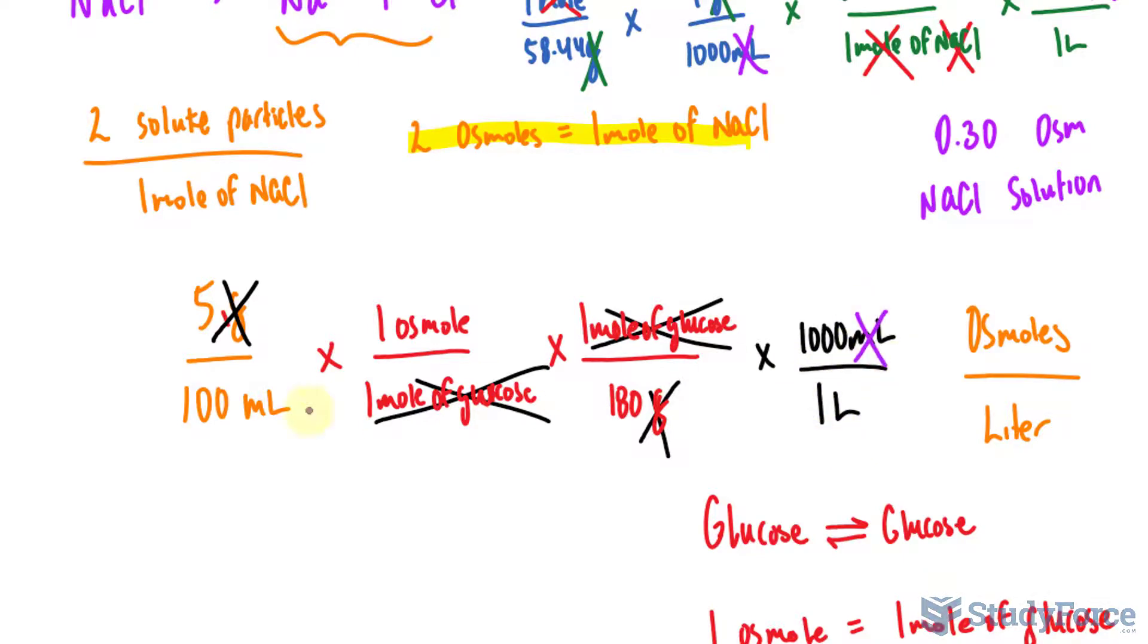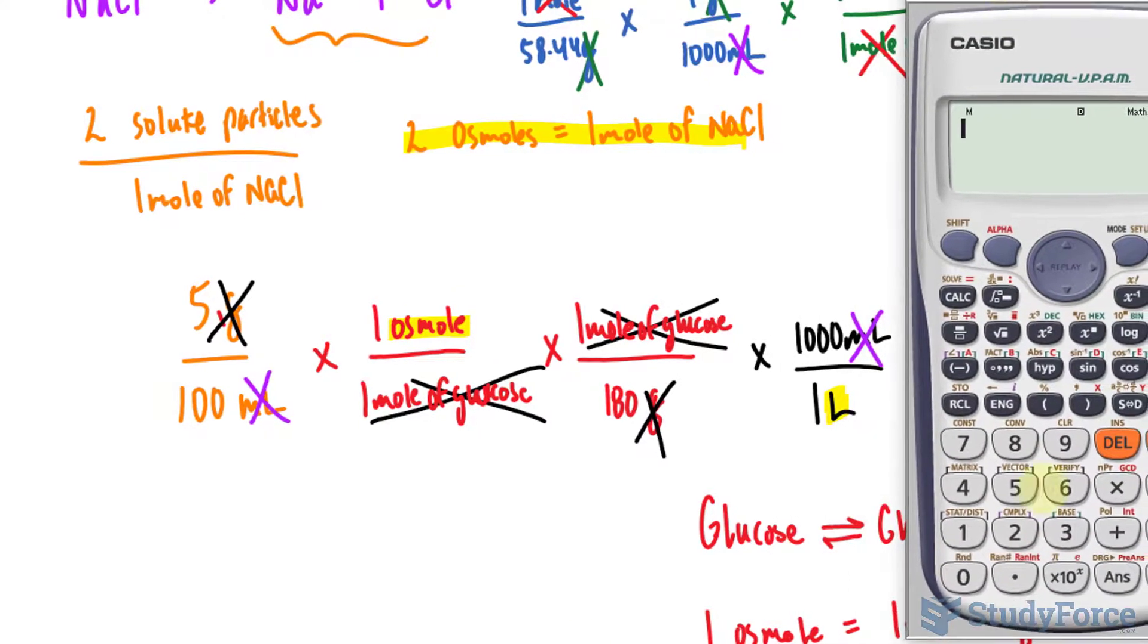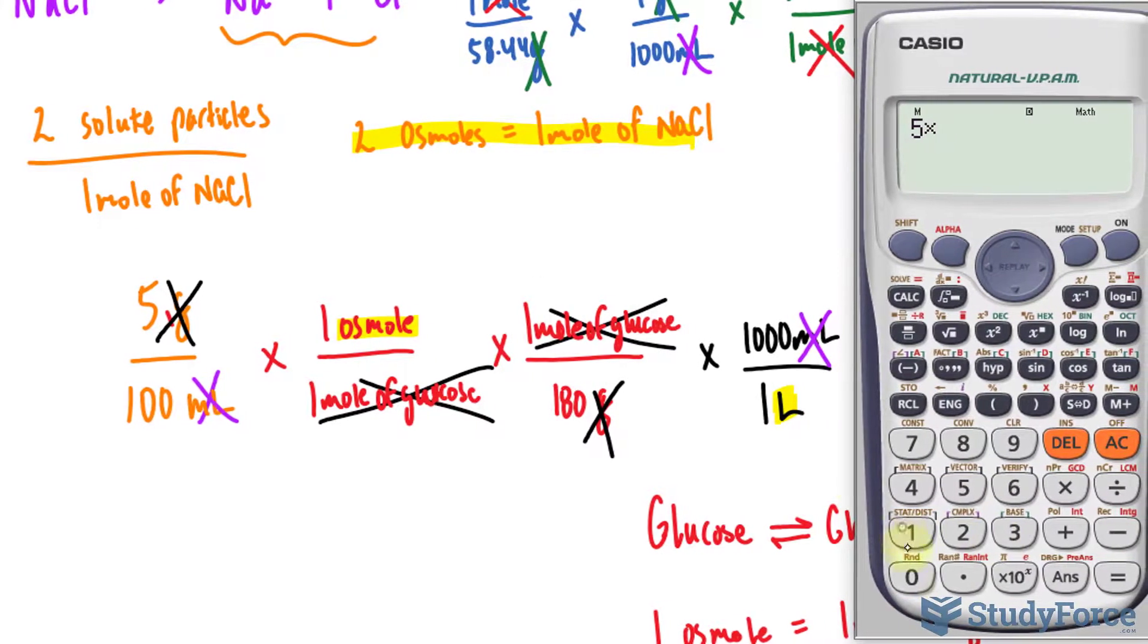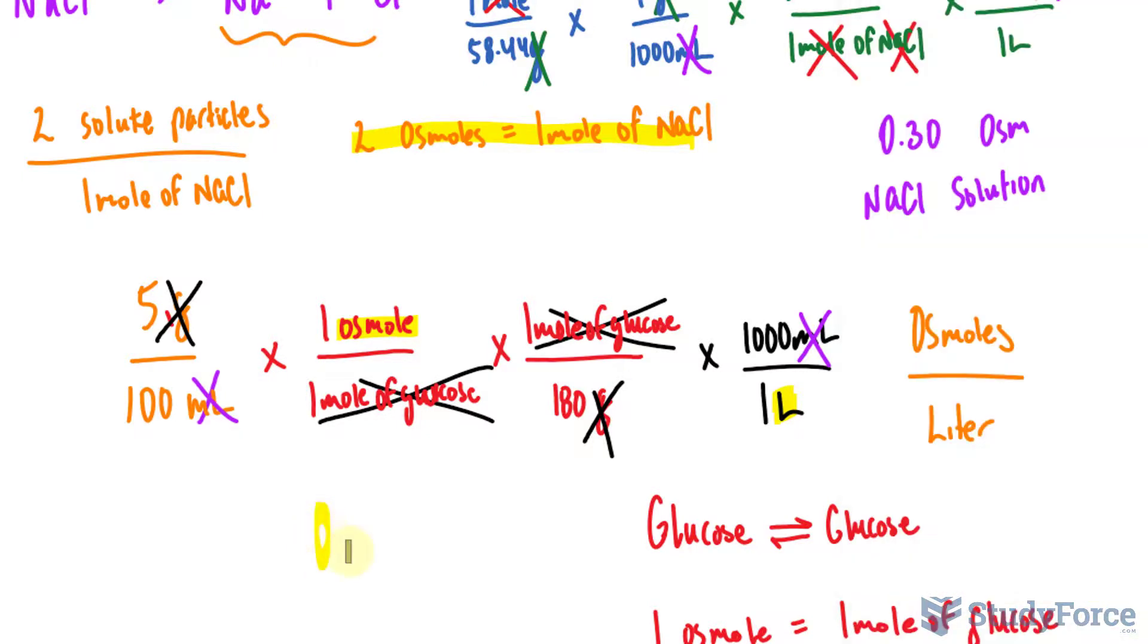So now this will cancel out with that, leaving us with the units osmoles per liter. Let's use our calculator to compute the following. So I have 5 times 1 times 1 times 1,000. I'll skip the ones and I get 5,000 at the top, divided by 100 times 1 times 180. And we end up with 0.27 repeating osmoles per 1 liter.